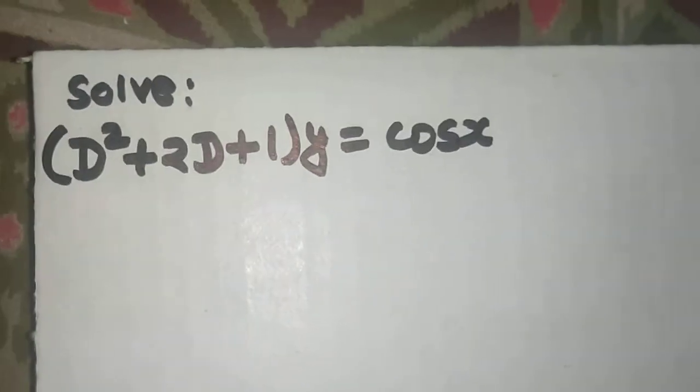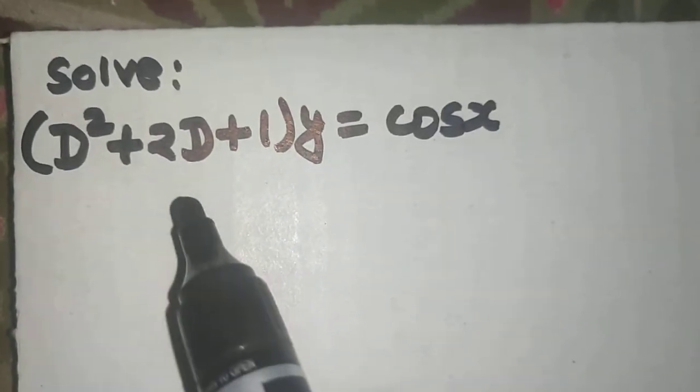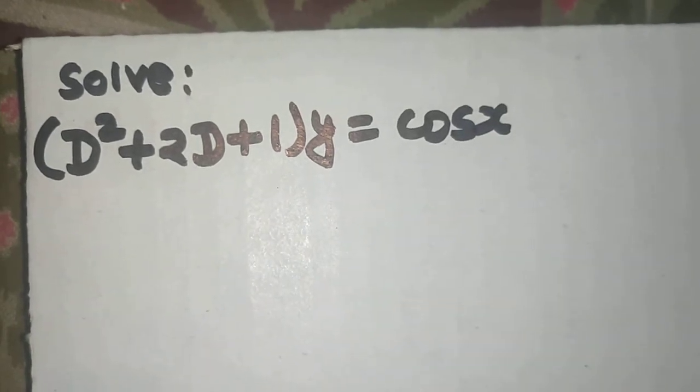Hello everyone, so let's solve this question. We need to solve d square plus 2d plus 1 operating on y equals to cos x.